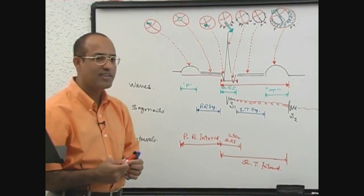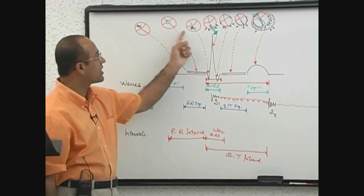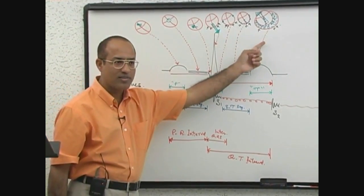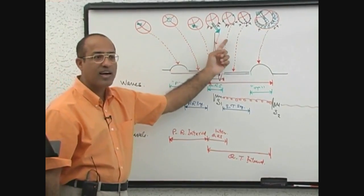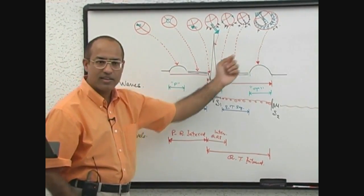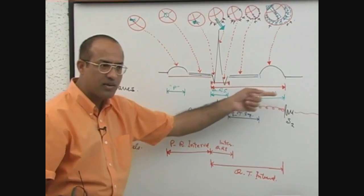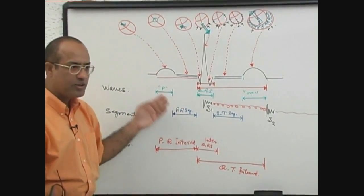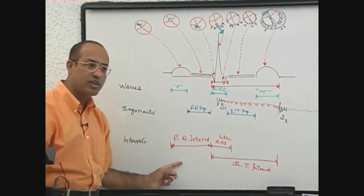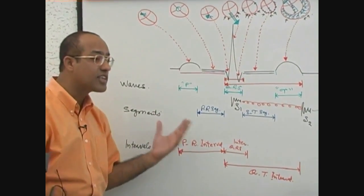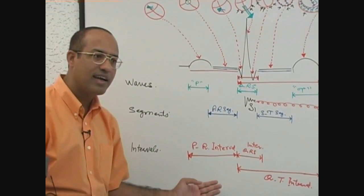To summarize what we have covered: first we identified the electrical activities in the heart; then we translated those into cardiac electrical vectors; from the vectors we produced the ECG pattern; then we analyzed the ECG pattern into waves, segments, and intervals; and finally we established the significance of each wave, segment, and interval.